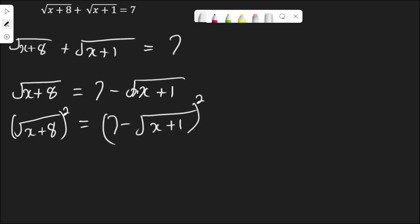Squaring this will clear the square root side. So I have x plus 8 equal to, now expanding this bracket by 7 minus root x plus 1 times 7 minus root x plus 1.